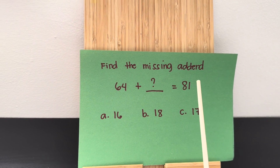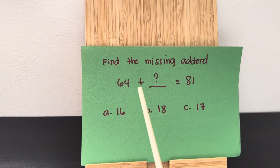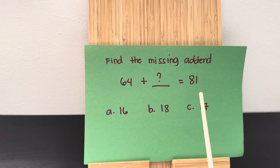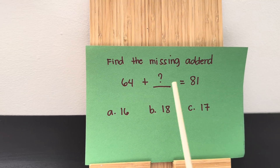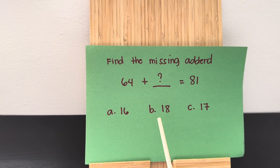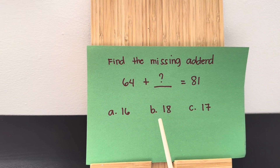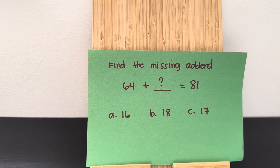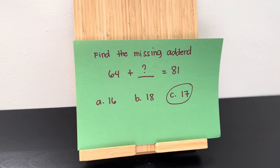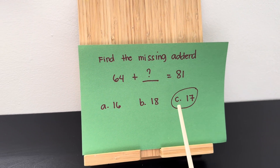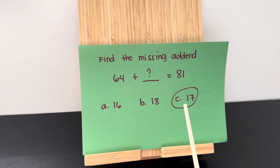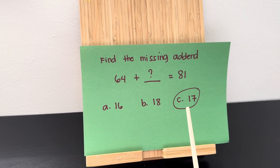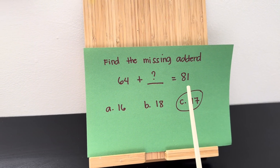Find the missing addend. 64 plus blank is equals to 81. Is it letter A, 16? B, 18? Or letter C, 17? And the right answer is letter C, 17. 64 plus 17 is equals to 81.